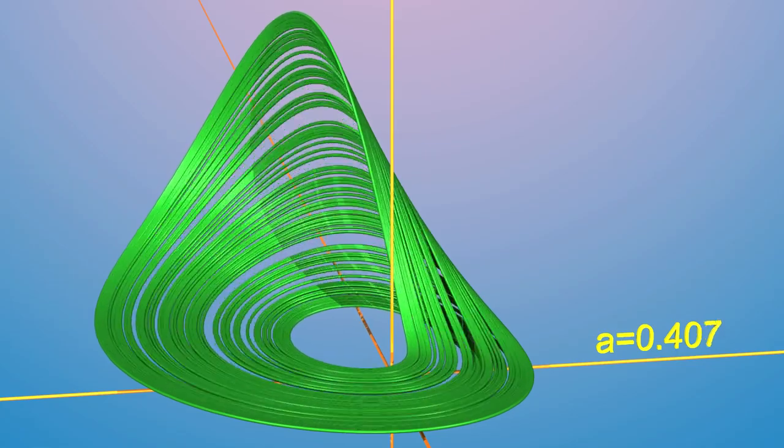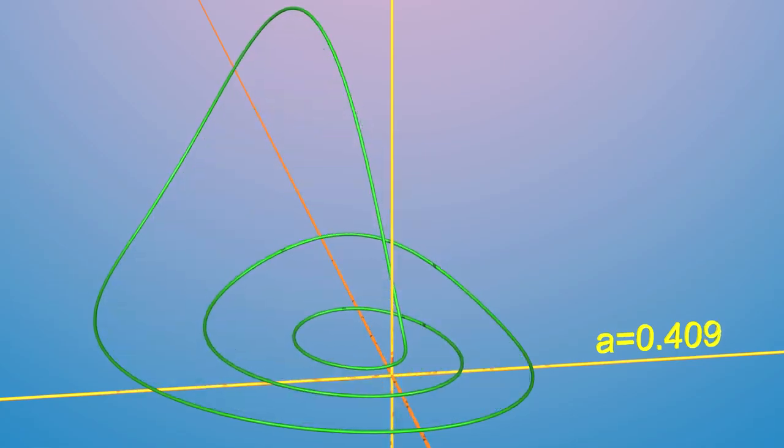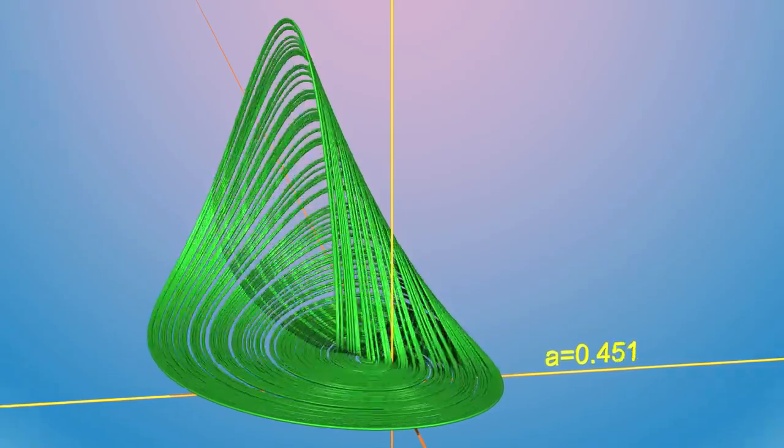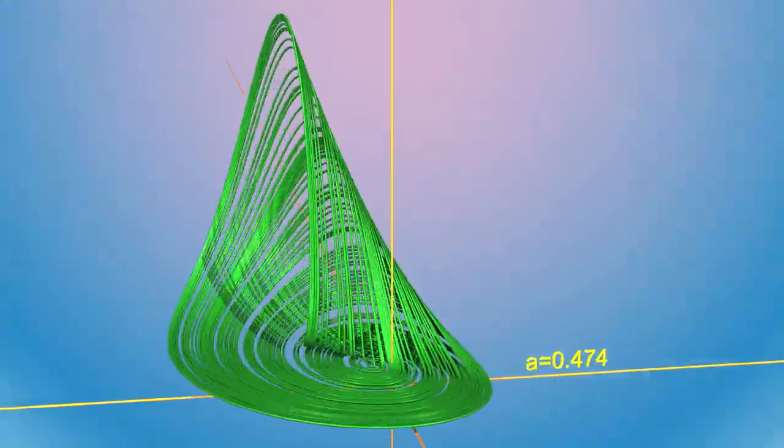But the surprise is, if we continue to increase the parameter A, sometimes, without warning, the chaotic dynamics simplify, returning to just a single periodic orbit.